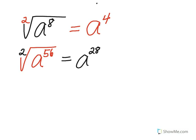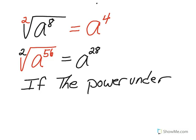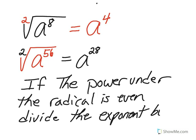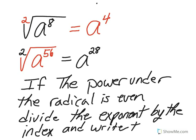So the rule is, if the power under the radical is even, divide the exponent by the index and write a new power. Pause the video. Copy this in your notes.